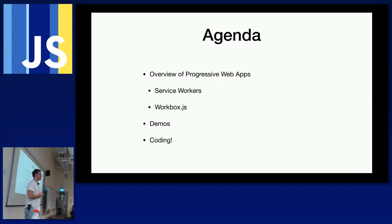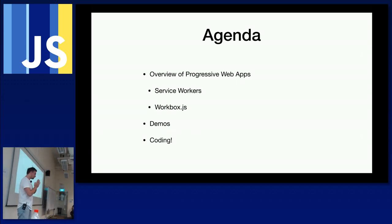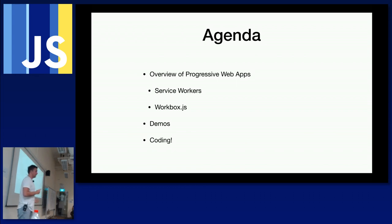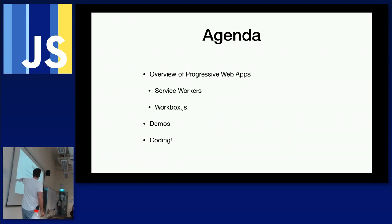We're going to have a crash course on PWAs and service workers. I'm going to show you a very basic example so you understand what a Progressive Web App is, what service workers do, and how a service worker enables PWA functionality. For those who already know this, please bear with me — I want to make sure everyone is on the same page. Then we'll look at PWAs in general, service workers, and Workbox.js.